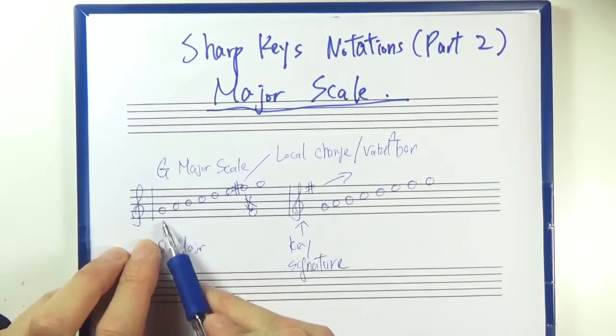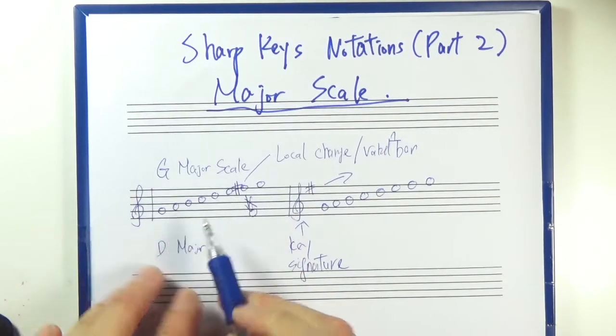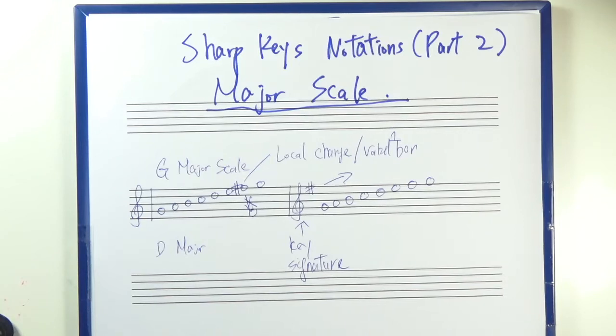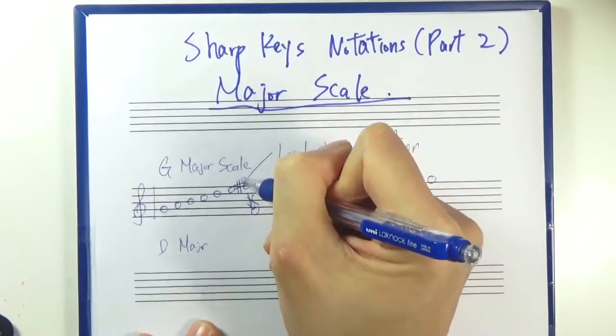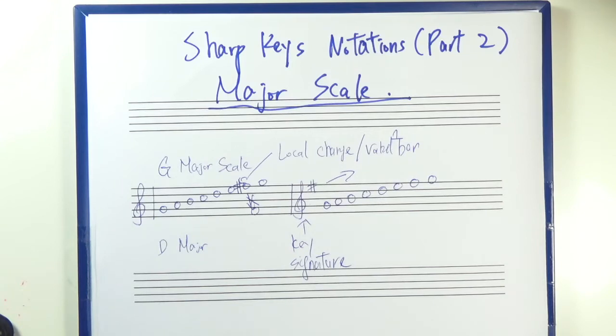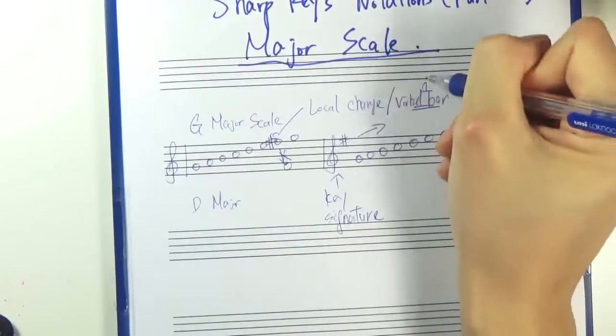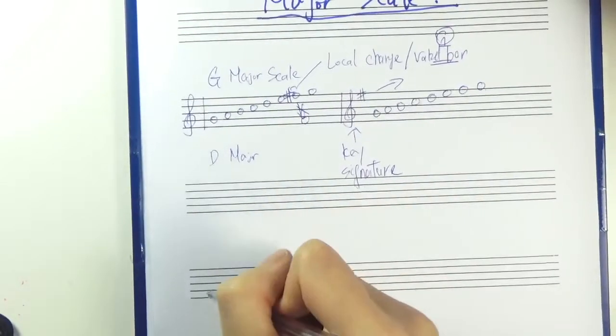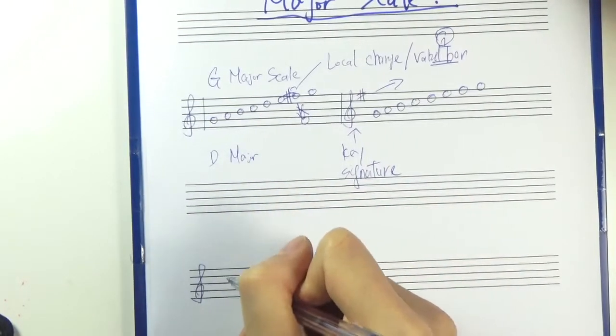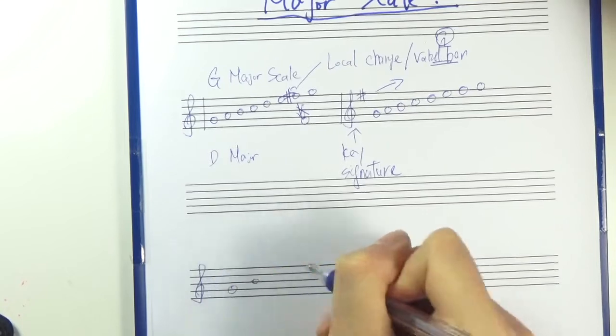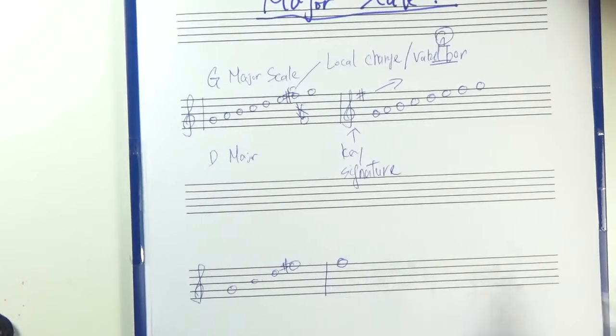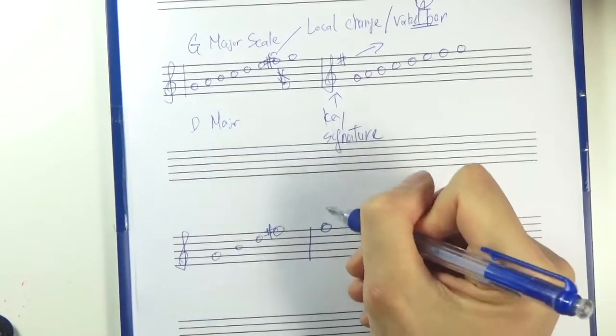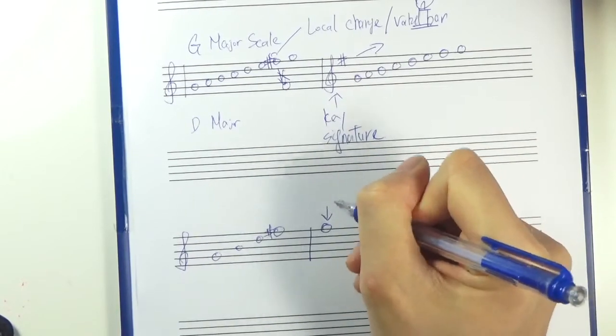Let's take a look at this one. So G A B C D E F sharp G. It's definitely a G major scale if we look at the structure. Though this F sharp, the sharp before this F note is actually temporary. It's only a local change. That means it only affects one bar. So for example if we have a piece of music that goes like this. When you go to the next bar, the F here is no longer an F sharp. It's an F.